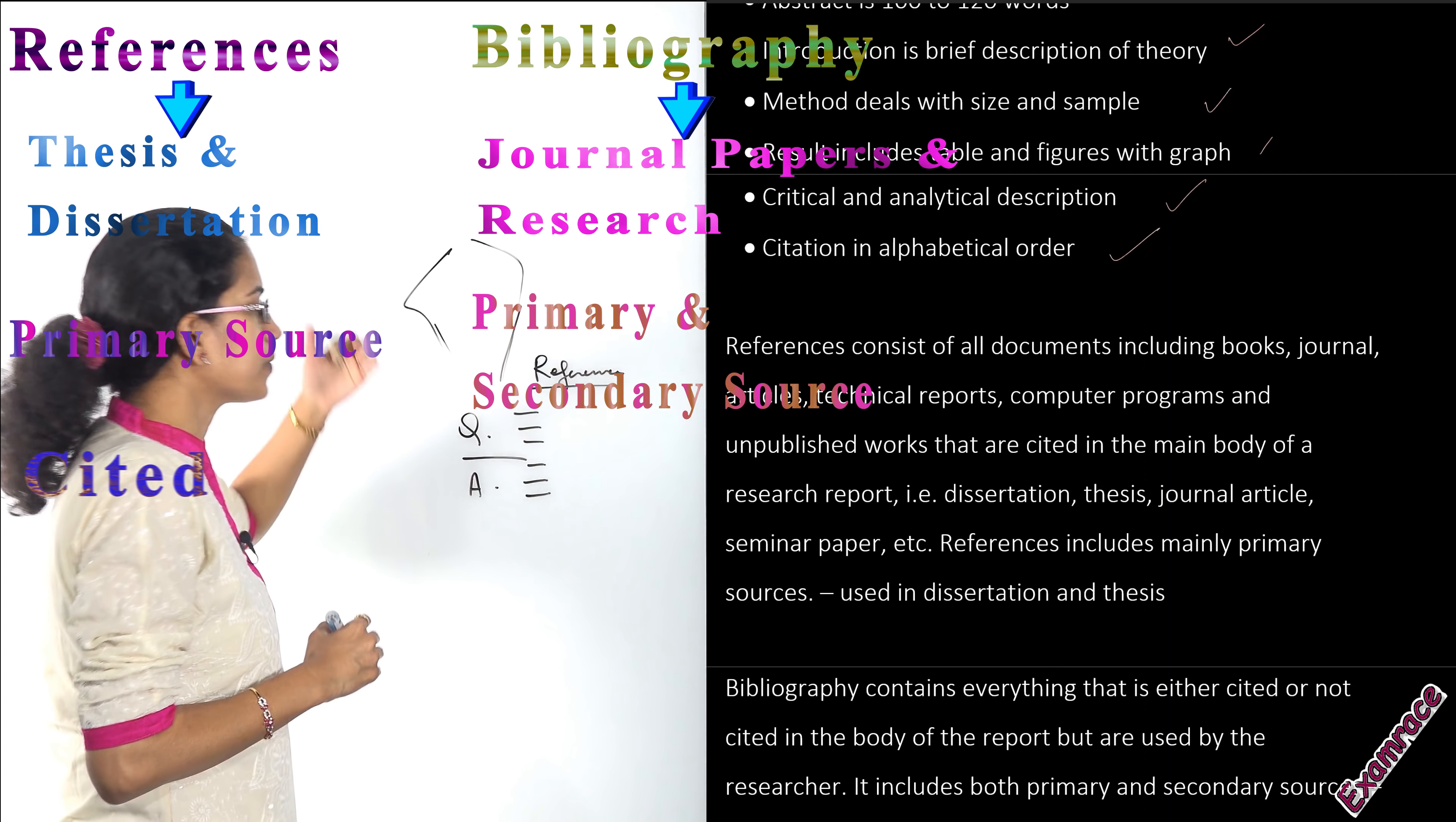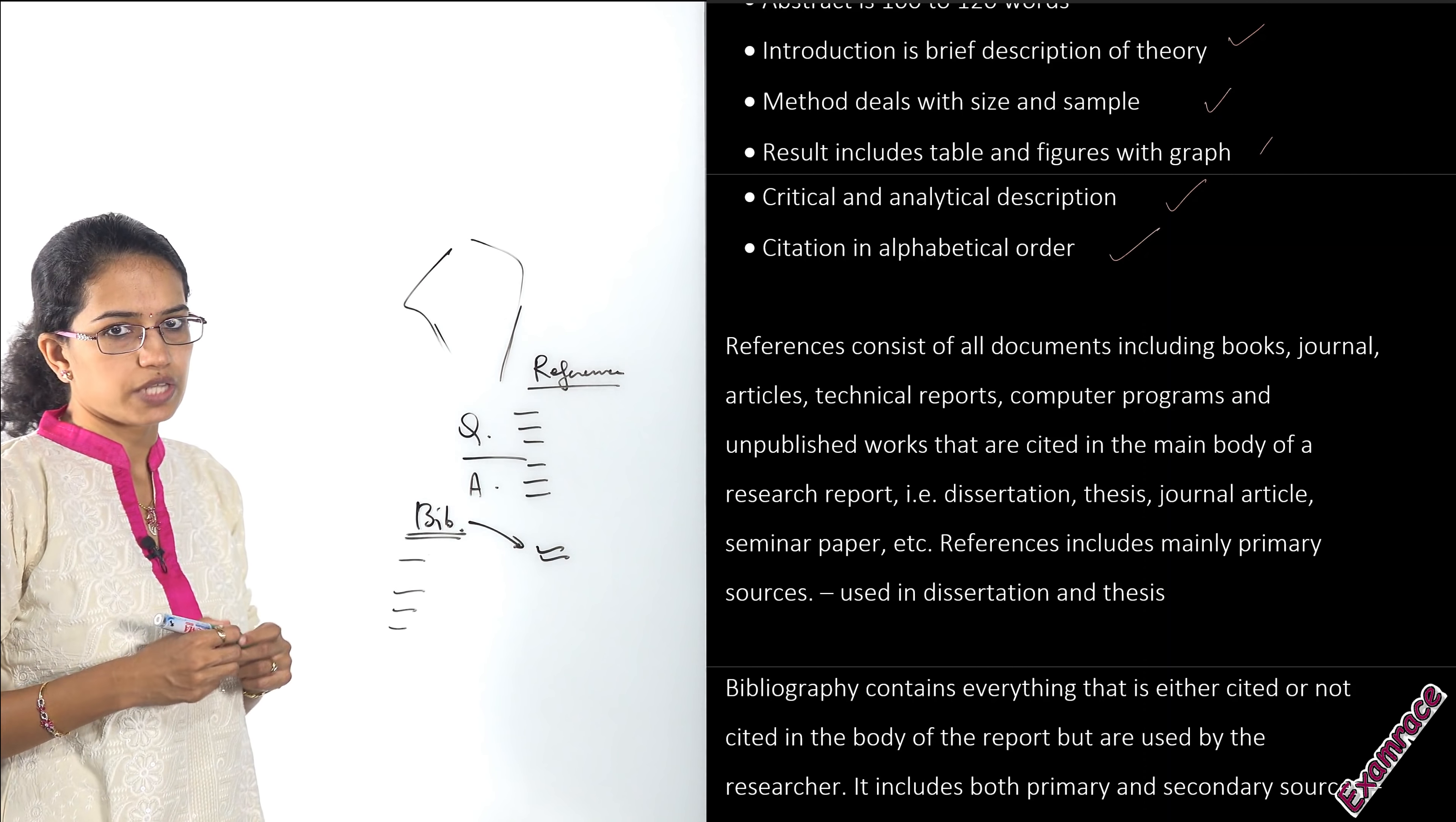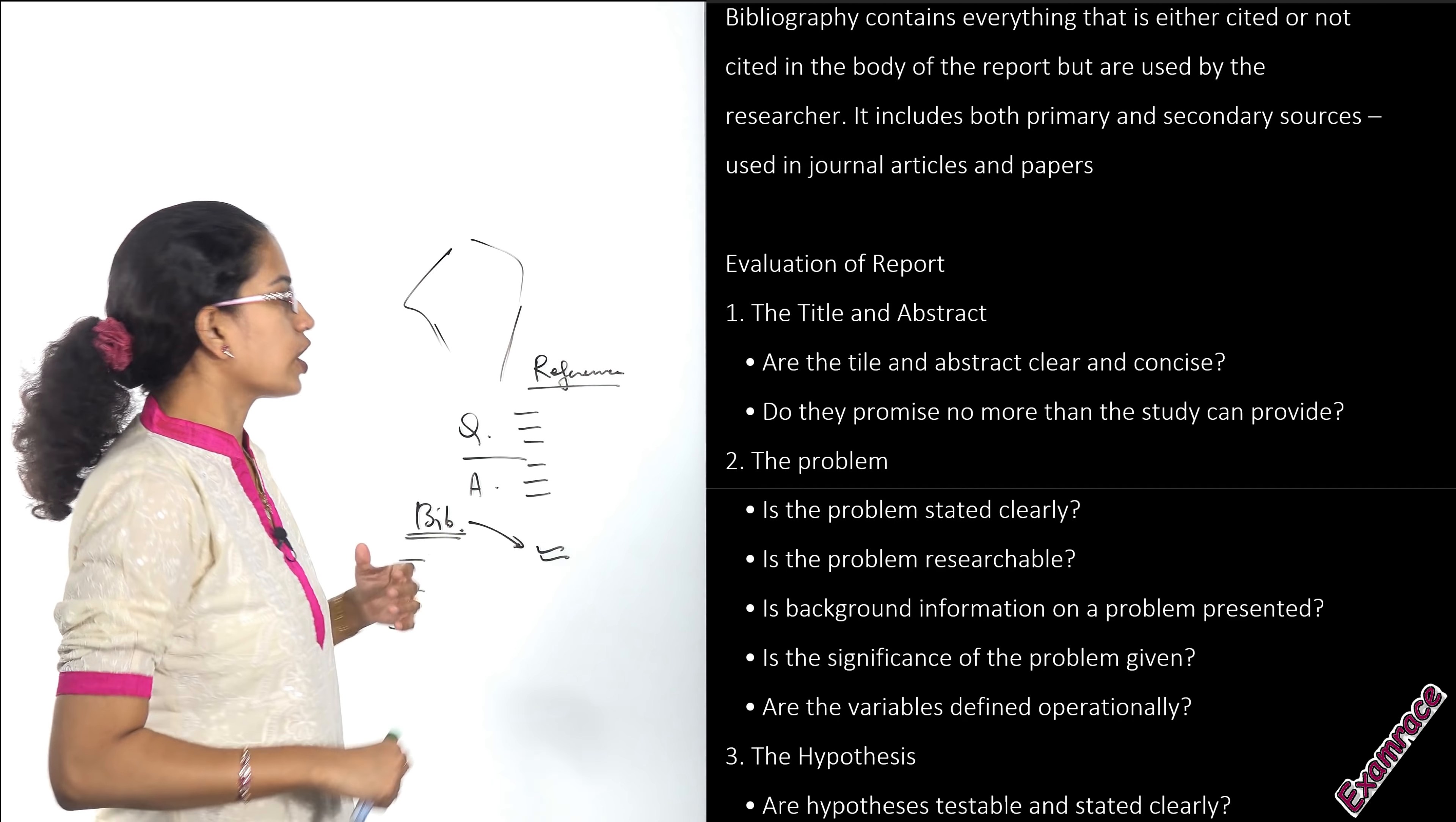Under bibliography, you would include all the papers that have been cited or referred, and those that have not been cited would also be included, considering that they would be important for further researches. So people who are doing further research would find it helpful. We have talked about the major differences between bibliography and references in a separate lecture, so you can refer to that as well.